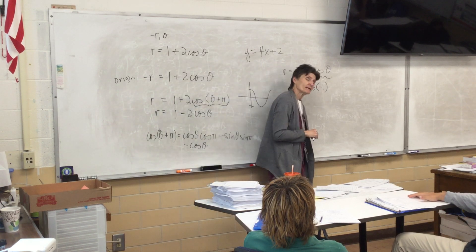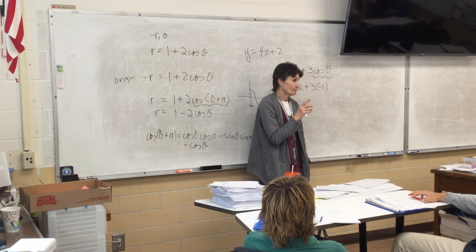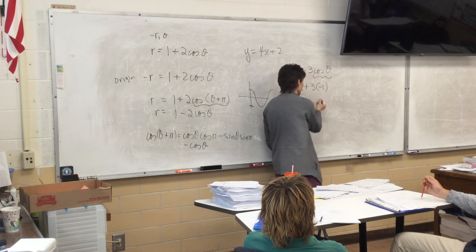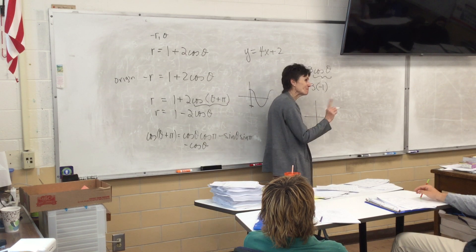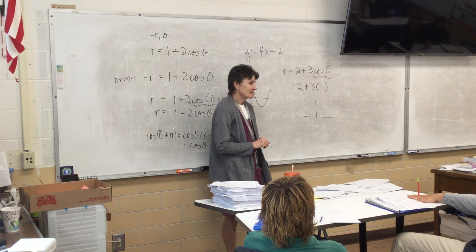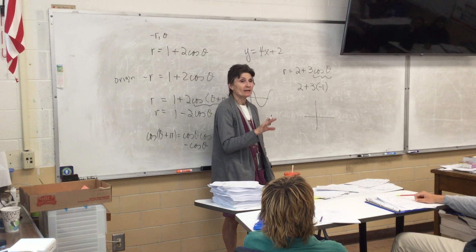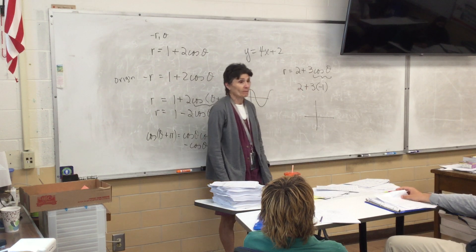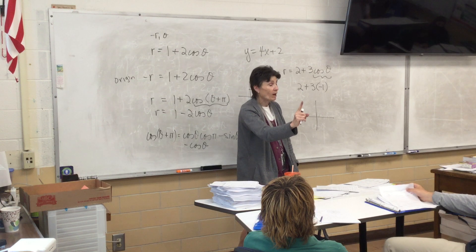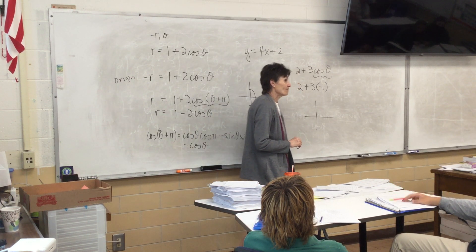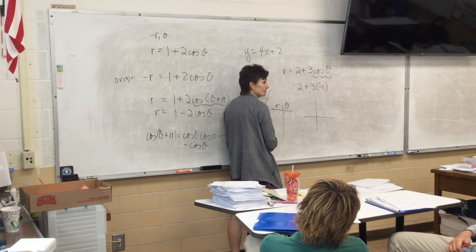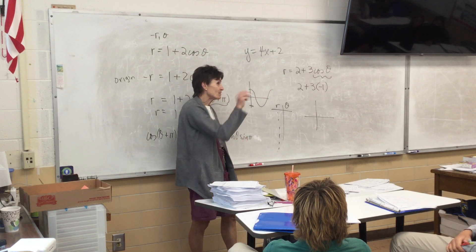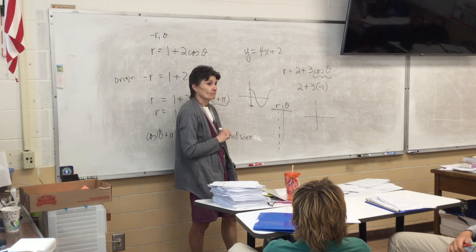Now unfortunately, what some of you did — and it's understandable — you saw the word minimum, got on your graphing calculator, and looked for the lowest point on the graph. That works if you're in a rectangular system, but you're not in a rectangular system. The maximum cosine value is 1, so the maximum r value would be 5. If you built a t-chart, the smallest value for r would be 1 and the biggest would be 5.